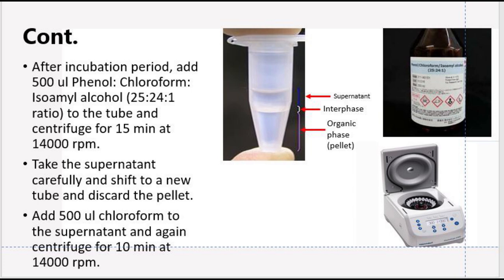After centrifuge, you will have three phases: the uppermost phase is the supernatant, below it is a small very thin layer that is interphase, and at the bottom there is an organic phase. Pick the uppermost phase, the supernatant, very carefully and shift it to a new eppendorf tube.